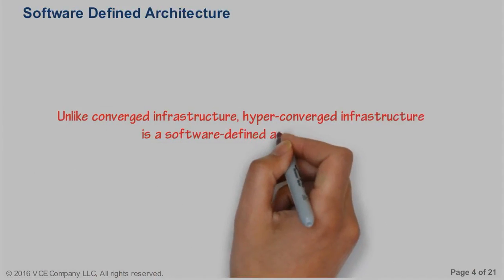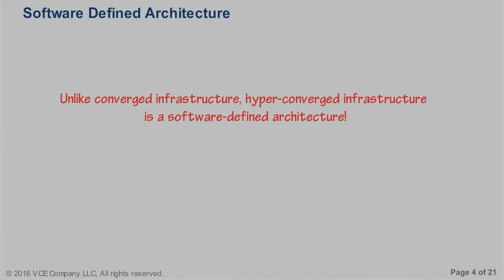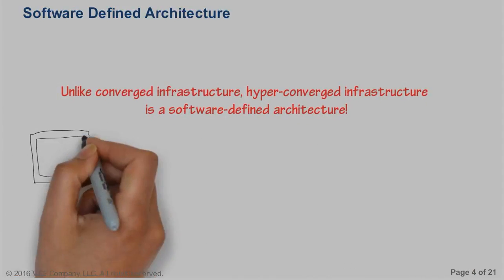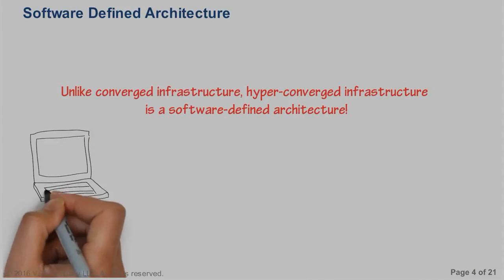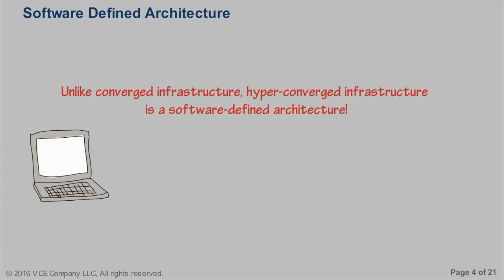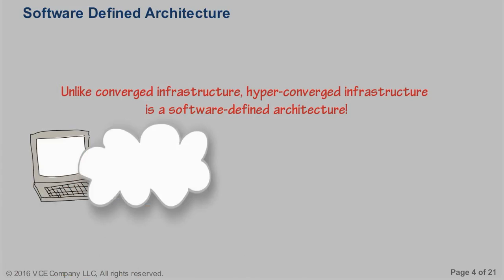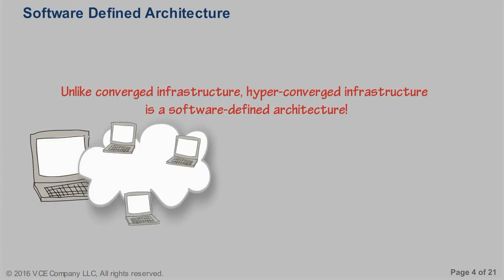Virtualization is a technology that allows a physical resource, like a computer, to be divided into a number of virtual devices that can behave like and do the same things as a physical device. Applied to compute, virtualization is the process of dividing the physical resources of a computer — things like its memory and processor — into separate virtual computers that can perform tasks just like a real physical computer can.